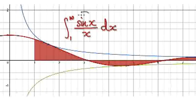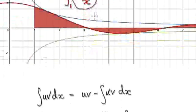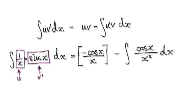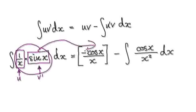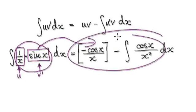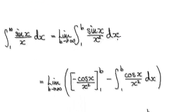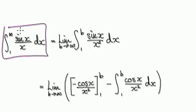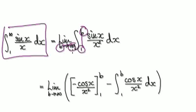To do this, we will ultimately need to integrate this, so use integration by parts. Our normal routine would be to integrate from 1 to b, and then let b head towards infinity.